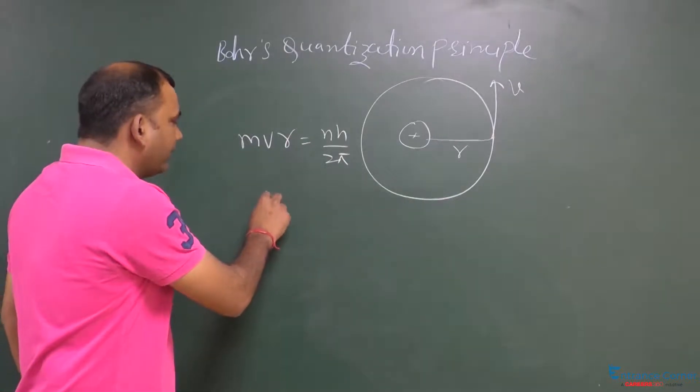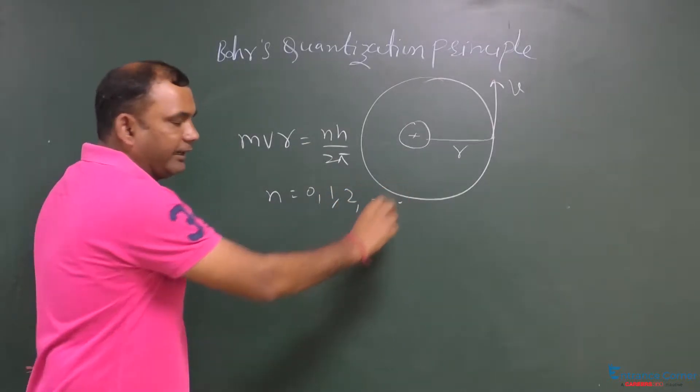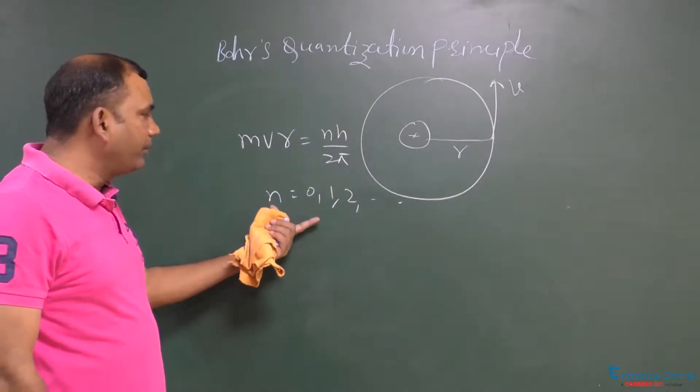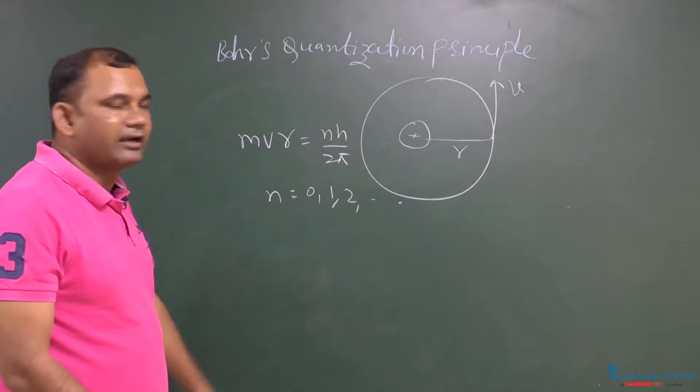So, n is any number which starts from 0, 1, 2 like that. It cannot be 1.5, 2.5, it is always an integer number.